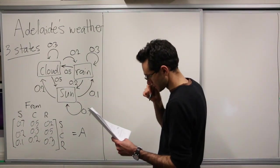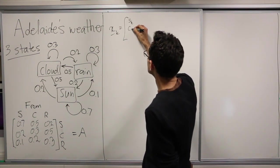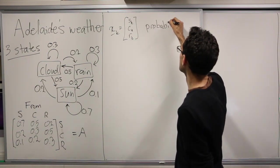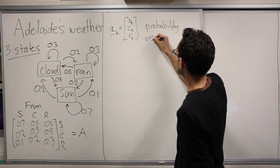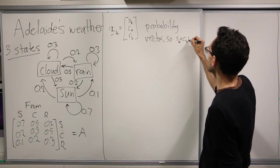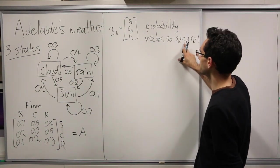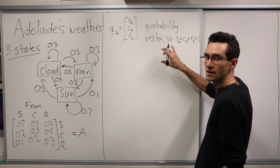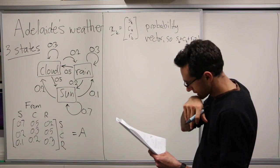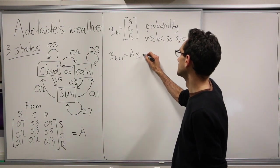And our state vector is going to be xk, which is sk, ck, rk, a probability vector. So sk plus ck plus rk equals 1. So the probability for it to be sunny, the probability for it to be cloudy, and the probability for it to be raining, these all add up to 1. And this is at day k, starting from some point.